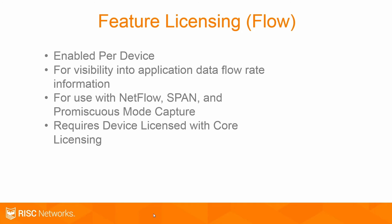Feature licensing, also known as flow licensing, is enabled per device and is used for visibility into application data flow rate information, for use with NetFlow, SPAN, and Promiscuous Mode Capture on VMware. It requires devices to be licensed with core licensing.